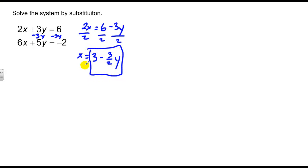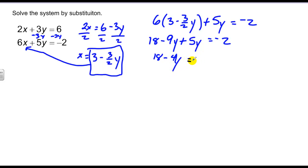So I'll take that value for x, plug it into the value of x in the second equation. It's 6 times 3 minus 3 halves y plus 5y equals negative 2. Distribute: 18 minus 9y plus 5y equals negative 2. That's 18 minus 4y is equal to negative 2. Subtract 18 to both sides. Get negative 4y is equal to negative 20. Divide by negative 4 to both sides. And get y is equal to 5.